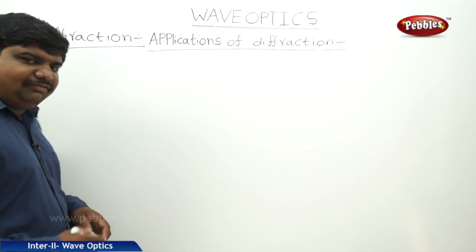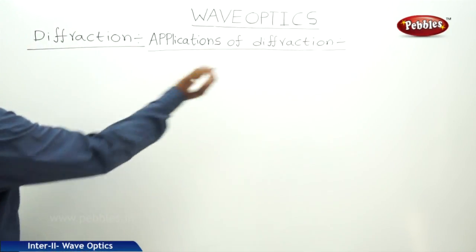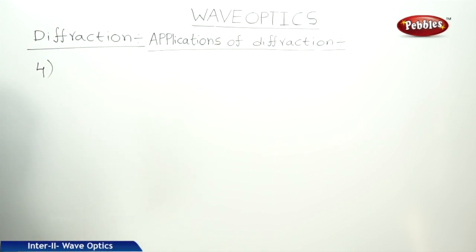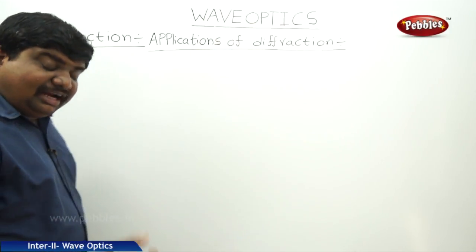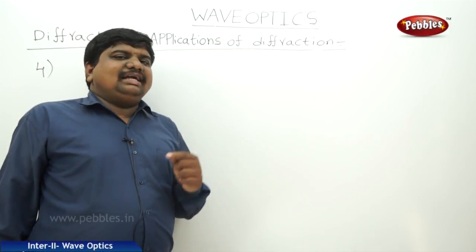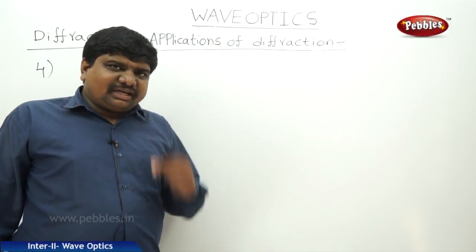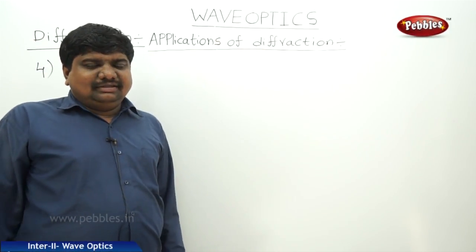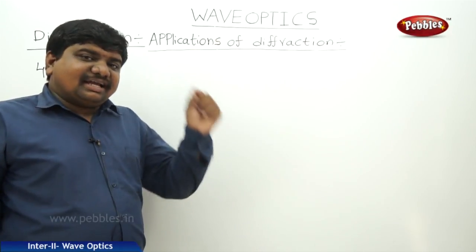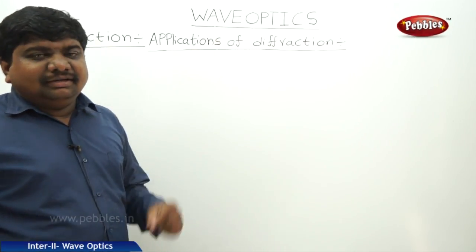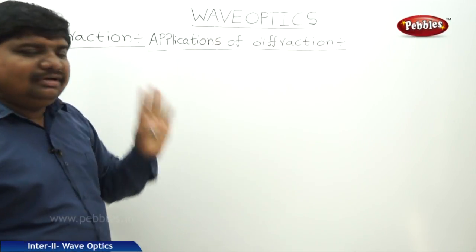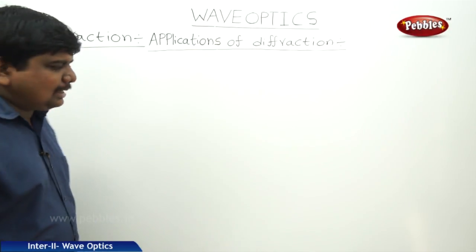The next application of diffraction is to find the wavelength of monochromatic light or composite radiation by using the diffraction grating. Diffraction grating is based on the principle of diffraction.